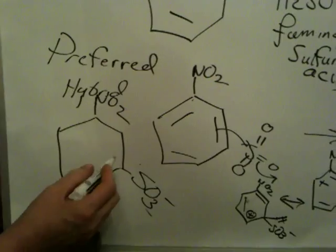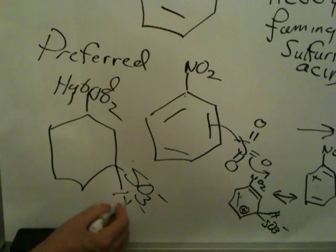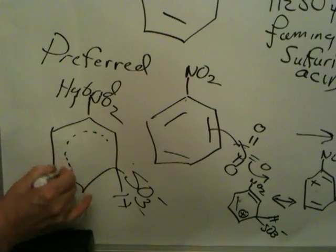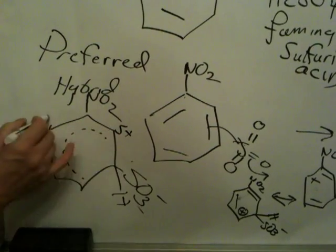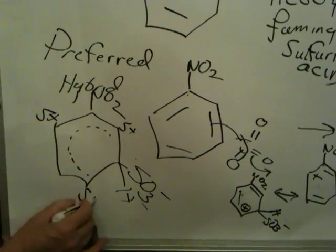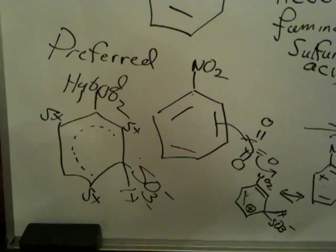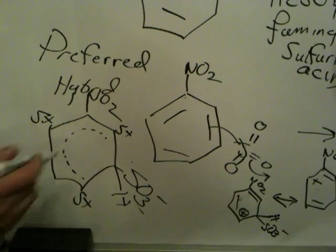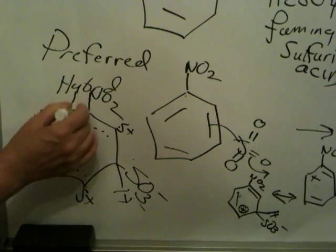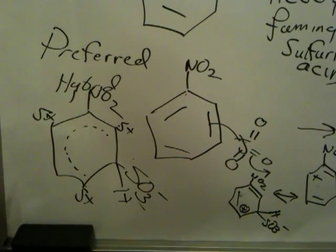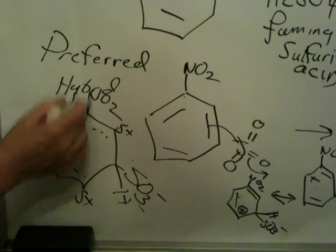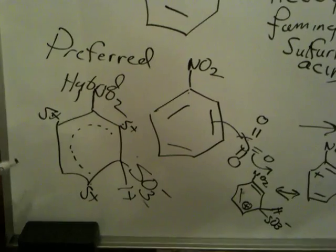We're going to eventually put a proton on there. Your hybrid would look like this. You'd have a delta plus there, delta plus there, delta plus there. What you want to think about is why is this advantageous for the charge to never land at the site with the electron withdrawing group? It's because this group pulls density off, and it would destabilize a positive charge at that location.